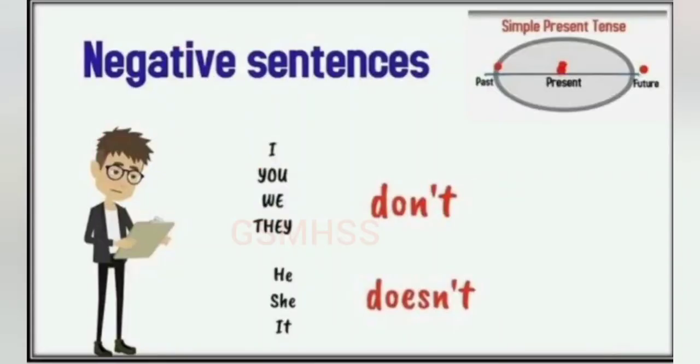Where do we use 'do not' and where do we use 'does not'? Look at the screen. For 'I', 'you', 'we', and 'they', we have to use 'do not'. The short form of 'do not' is 'don't'. For 'he', 'she', 'it', and also for names and singular subjects, we have to use 'does not'.